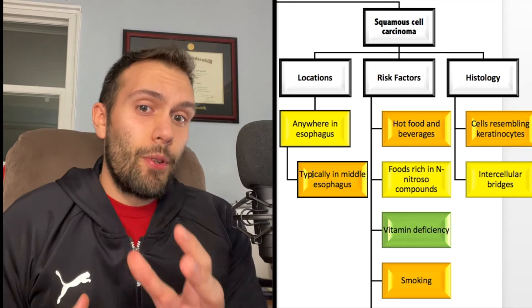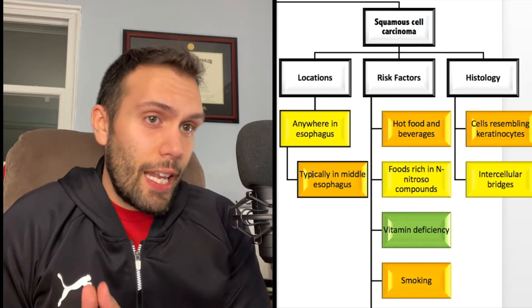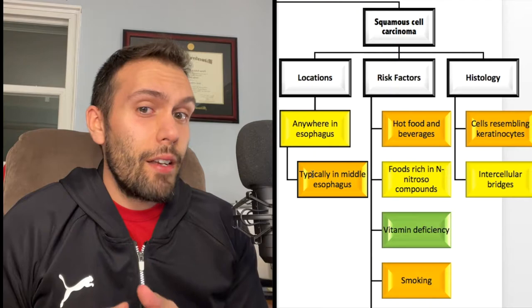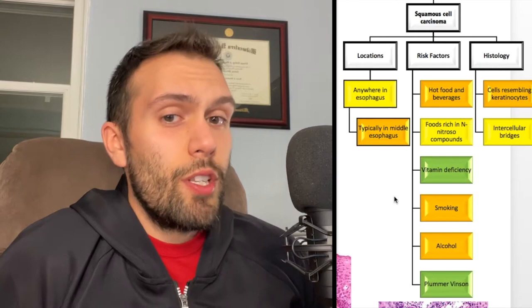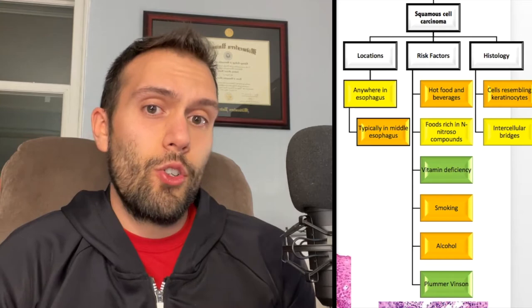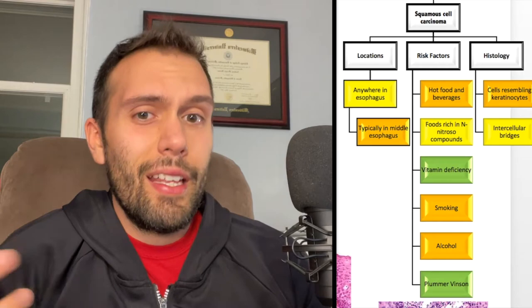Now let's talk about squamous cell carcinoma. In board questions, it's usually said to be in the upper or middle esophagus, though in reality squamous cell carcinoma can be anywhere in the esophagus. Risk factors differ from adenocarcinoma. Smoking carried over as a risk factor, but when board questions ask about smoking and alcohol — especially in combination, which synergistically and exponentially increases risk — they're pointing more toward squamous cell carcinoma. Alcohol is actually the primary risk factor for squamous cell carcinoma.